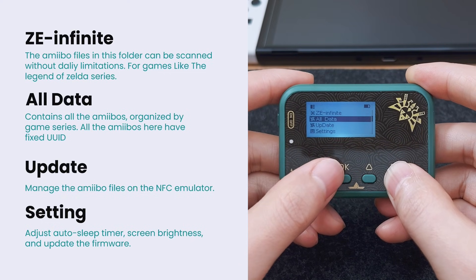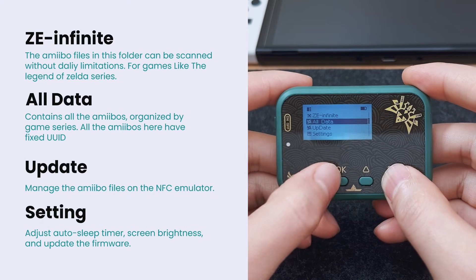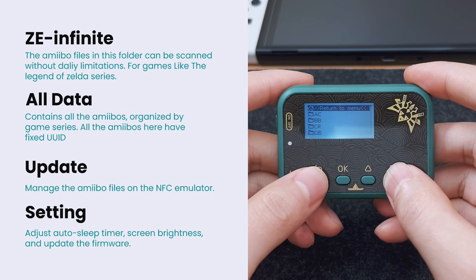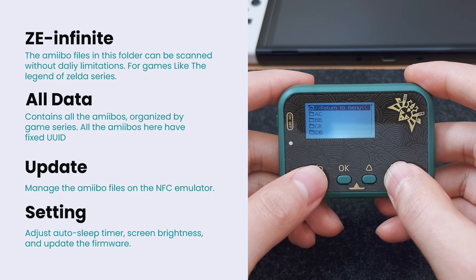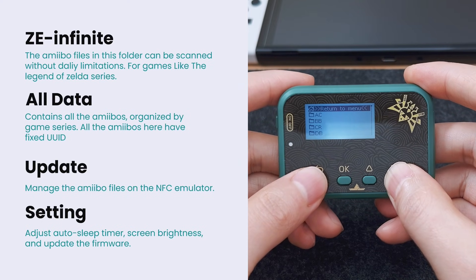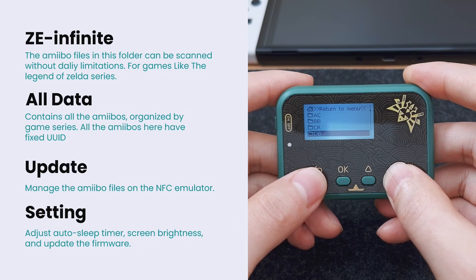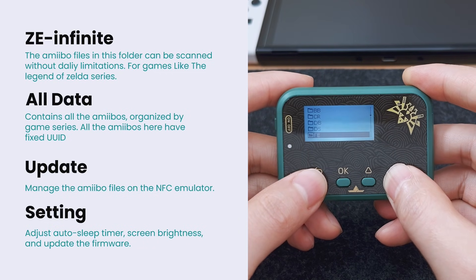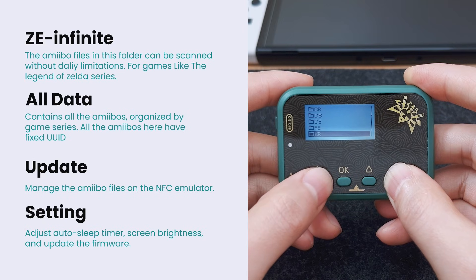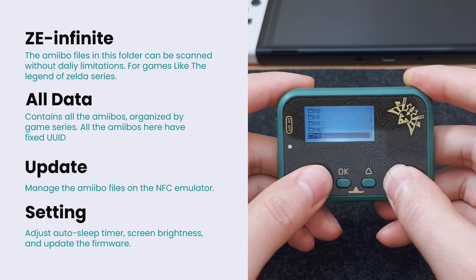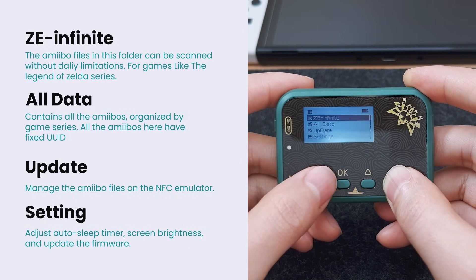All Data contains all the amiibos organized by game series. Please be aware that the amiibo files in this section have a fixed UUID, functioning like regular amiibos. This is very important for games like Super Smash Brothers and Splatoon, which require a fixed UUID.